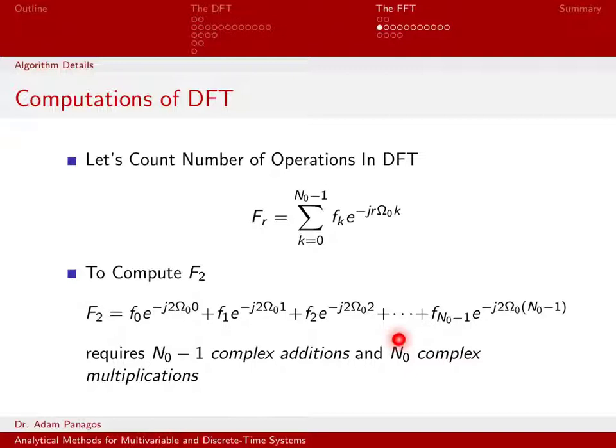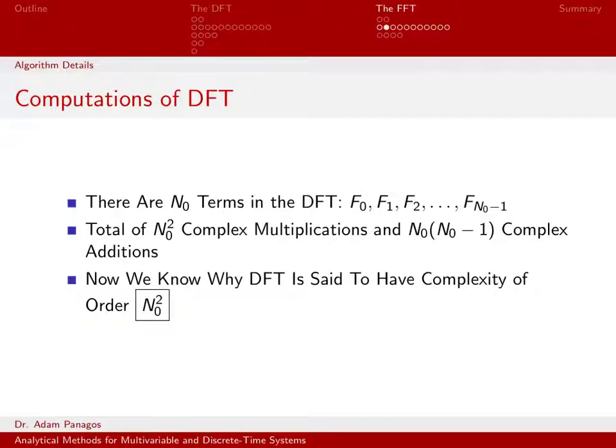But F2 isn't the only thing I need to compute. I also need to compute F0, and F1, and F3, and F4, all the way up to N0 minus 1. So let's think about that. If I have to do this same type of complex additions and same number of complex multiplications for each term of my DFT, F0, F1, F2, all the way up to FN0 minus 1, I can now tally up the total number of complex multiplications and complex additions for doing the entire DFT computation.